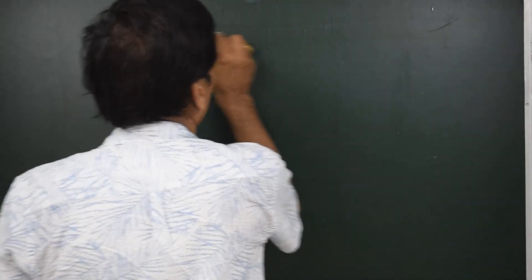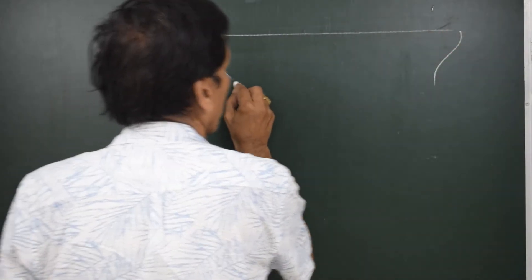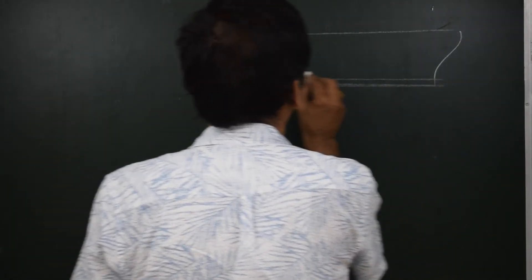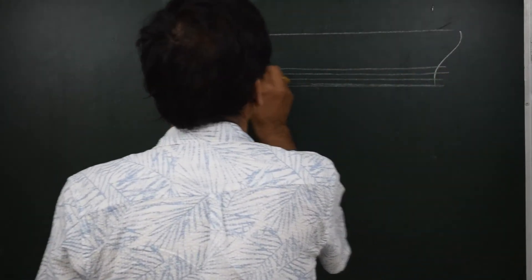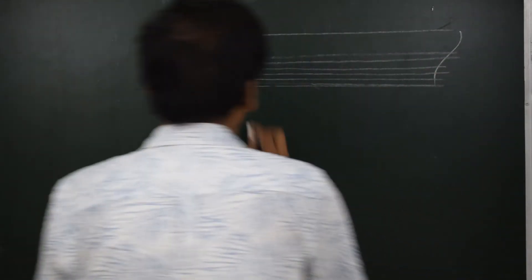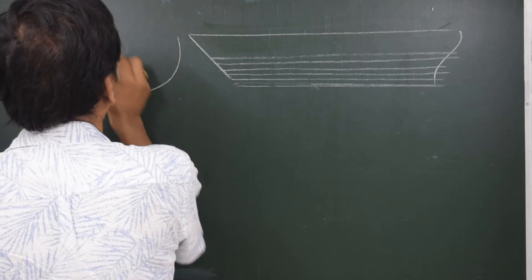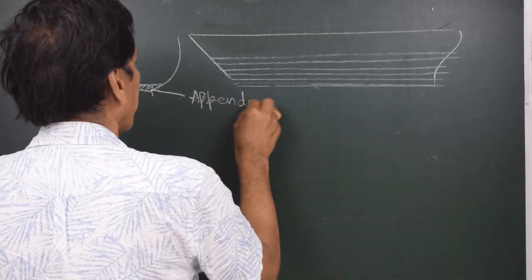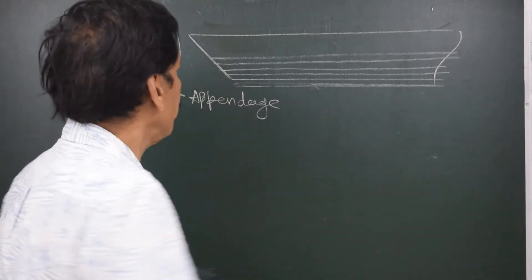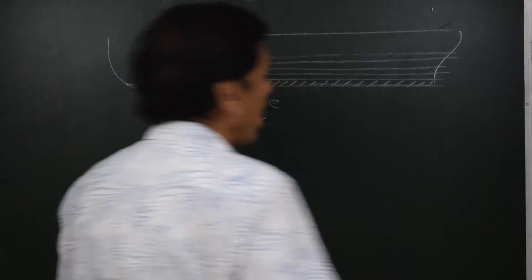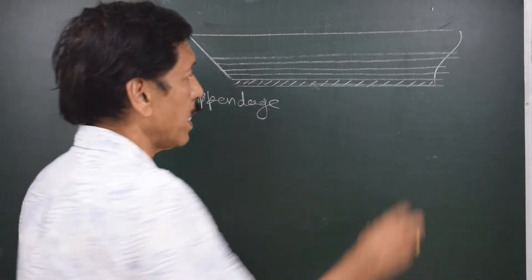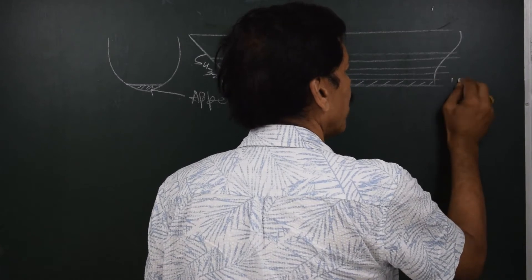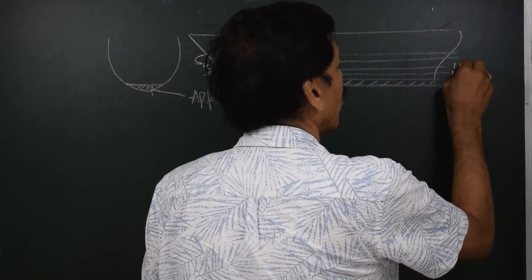Let us take a medium-sized freighter. This part that is up to the draft of one meter is the appendage. What we see is the waterline at different drafts: 1 meter, 2, 3, 4, and 5 meters. The TPC is given at these drafts as 11, 13, 14, 15, and 16.